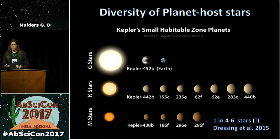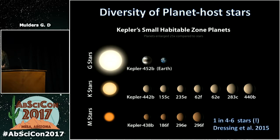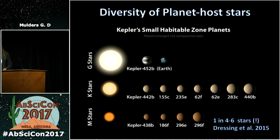But this also reflects the underlying population statistics. If you do the calculation and correct for detection biases, you find that about one in four to one in six M stars have Earth-sized planets in the habitable zone. And of course there are many more M stars in the solar neighborhood and in the galaxy than G-type stars, so this might be the prime location to look for terrestrial-sized planets in the habitable zone.